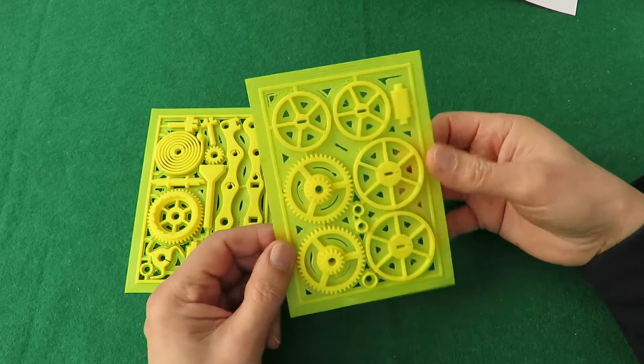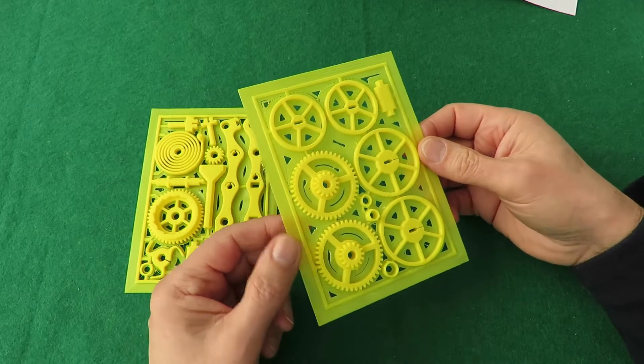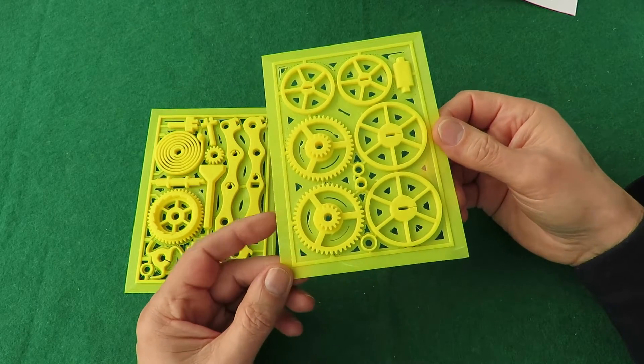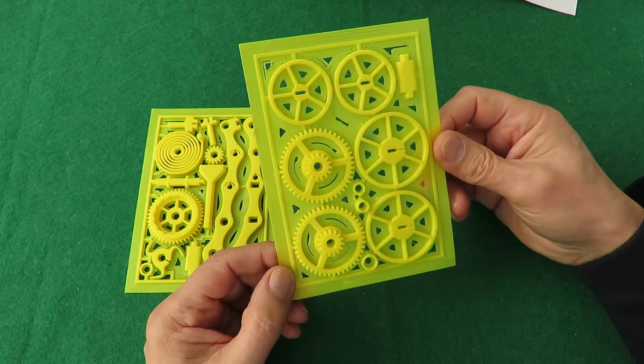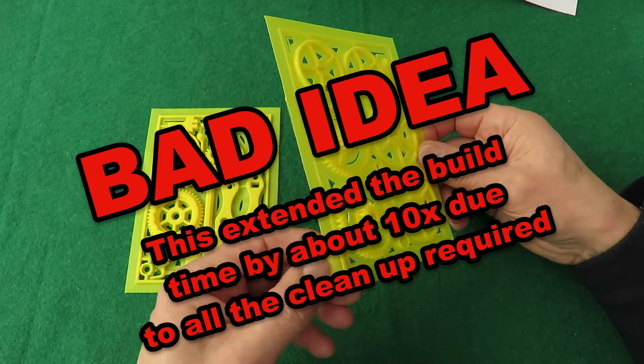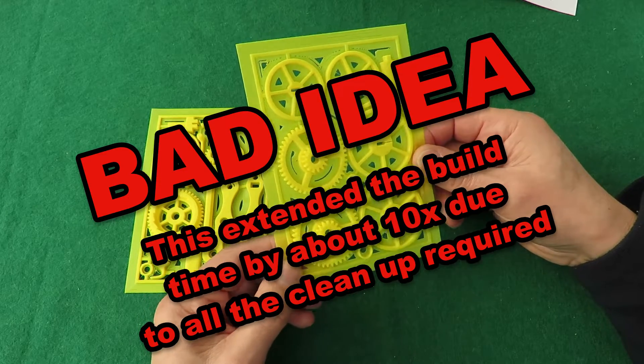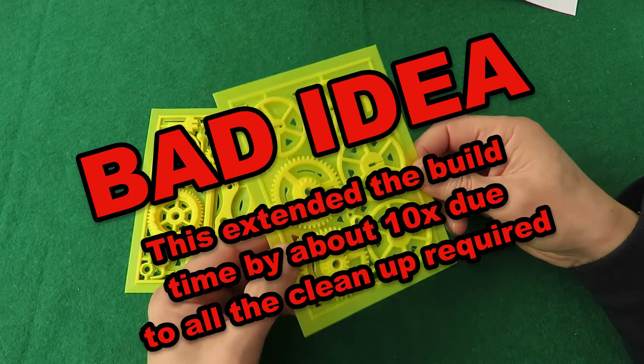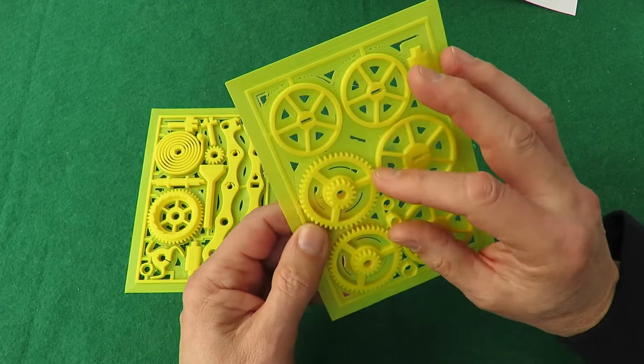Now I've been experimenting with different print setups and I printed this with a brim method, which is where it puts this very thin layer around the outside. I don't know if that's a good idea or not because it might be a problem when we come to the gears.